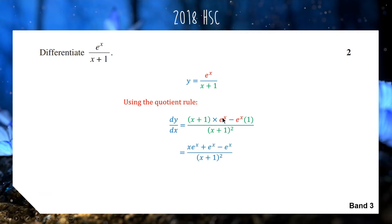That gets you one mark for applying your quotient rule properly. Now we tidy up. We have x e to the x plus e to the x, take away e to the x. These two cancel, leaving us with a final answer of x e to the x over x plus 1 squared for 2 marks.